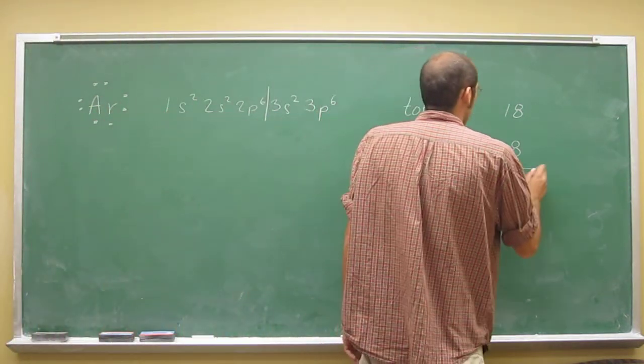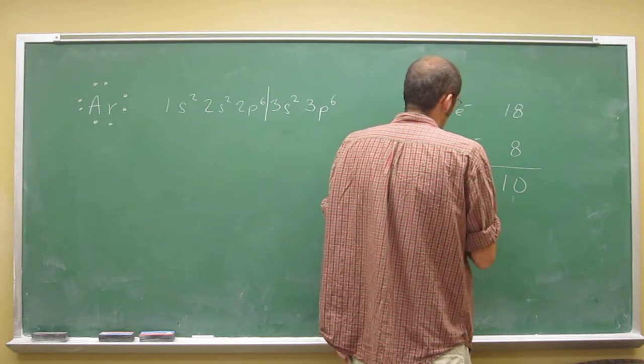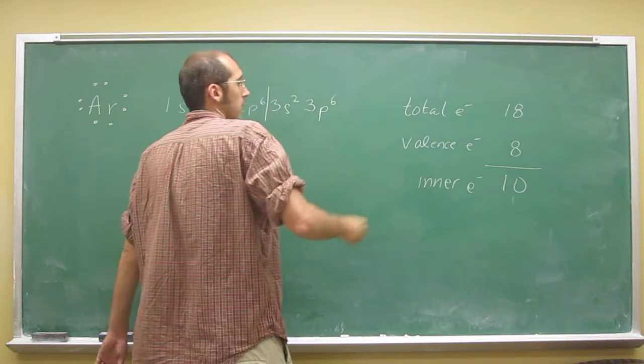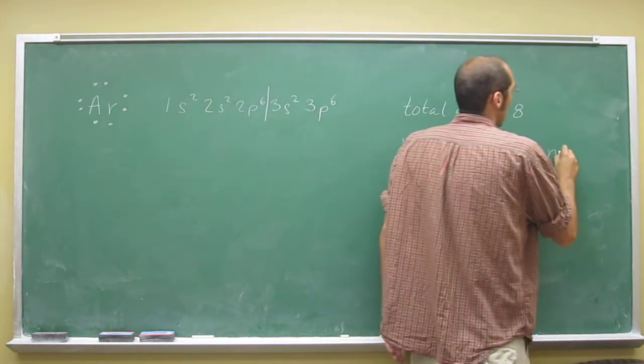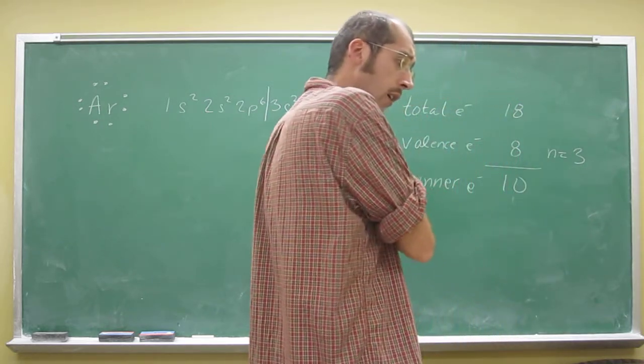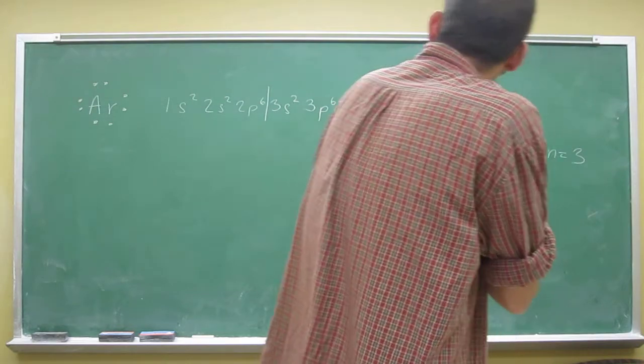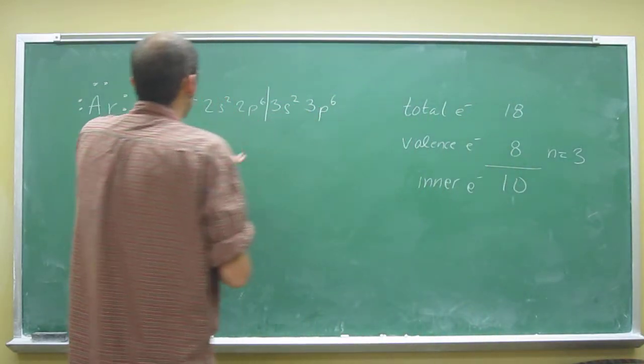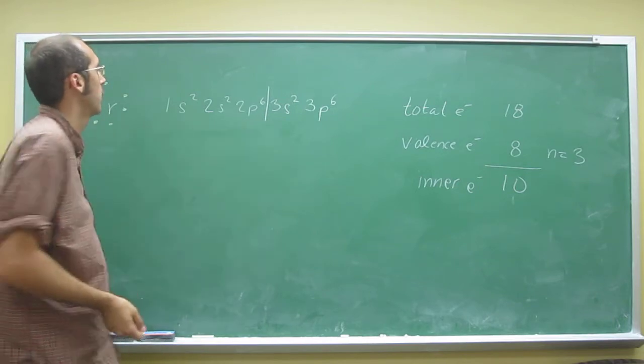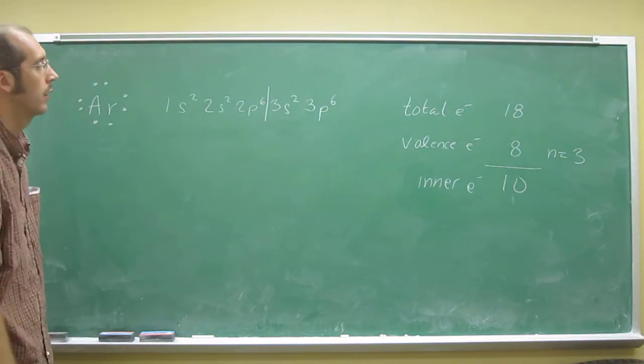So where are the valence electrons? They're in the n equals 3, and that's all the masses, right? So all of these guys are the inner electrons, so these guys, of course, are in the n equals 2, and these are in the n equals 1 energy level, right?